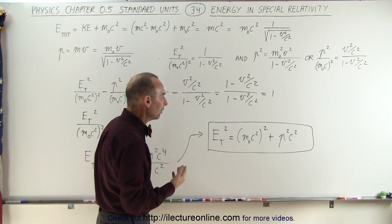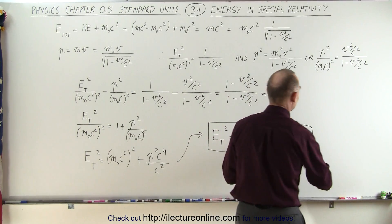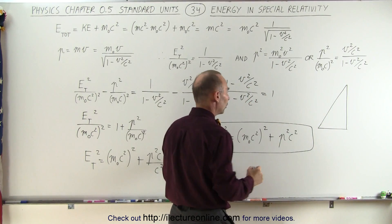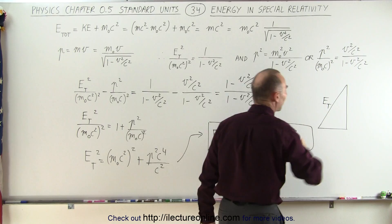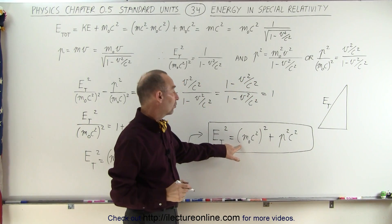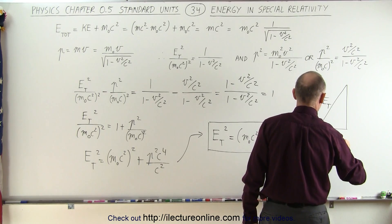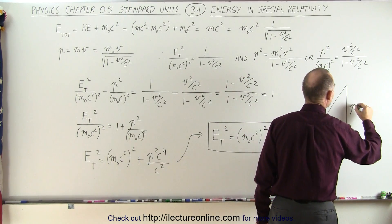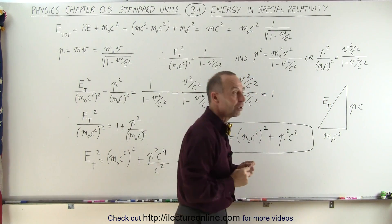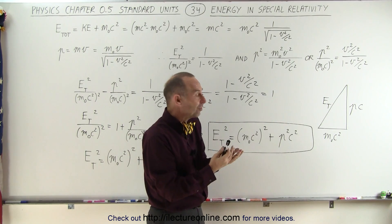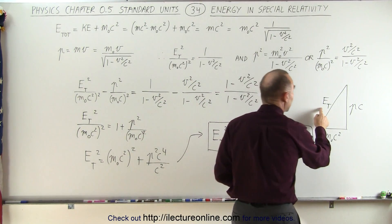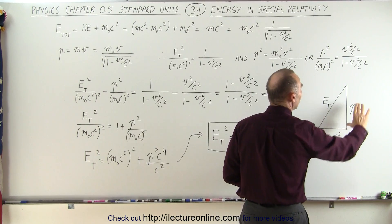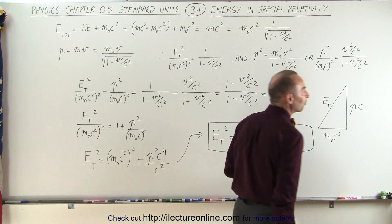This kind of looks like the Pythagorean theorem. If we graph that out, we end up with a triangle where the hypotenuse represents the total energy, one side represents the rest mass energy m-sub-naught c squared, and the other side represents p times c. So the total energy of a particle can be represented as the Pythagorean theorem — the square root of the sum of the two squares of the sides.